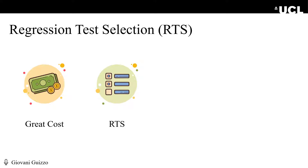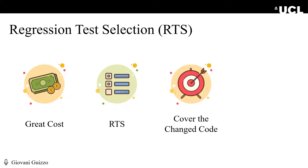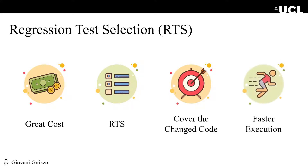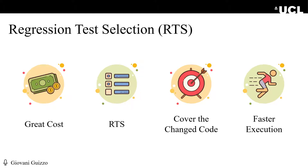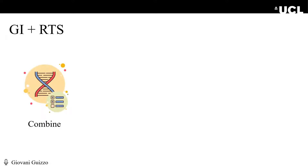Usually, RTS techniques search for the test cases that cover the changed piece of code, be it with dynamic or static analysis. The idea behind RTS is that by using fewer test cases, the testing phase will execute faster, thus reducing the need for computational resources. We hypothesize that RTS techniques can and should be used as a core component of GI in order to reduce its costs.